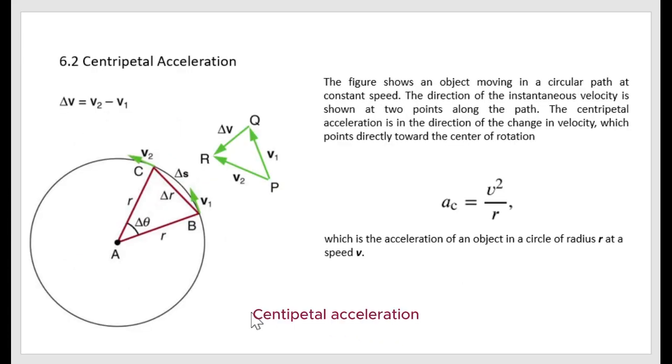Centripetal acceleration. The figure shows an object moving in a circular path at constant speed. The direction of instantaneous velocity is shown at two points along the path. The centripetal acceleration is in the direction of change in velocity, which points directly toward the center of rotation.